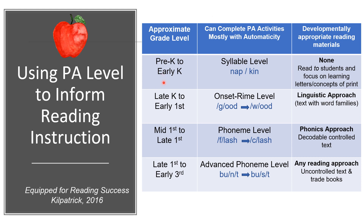For pre-K to early kindergarten, students are working at the syllable level. At this point, we should focus on reading to students and teaching them letter names, sounds, letter formation, and concepts of print. For late K to early first grade, this is the onset rhyme level — once students are proficient at that onset rhyme level, they're ready for the linguistic approach to reading.